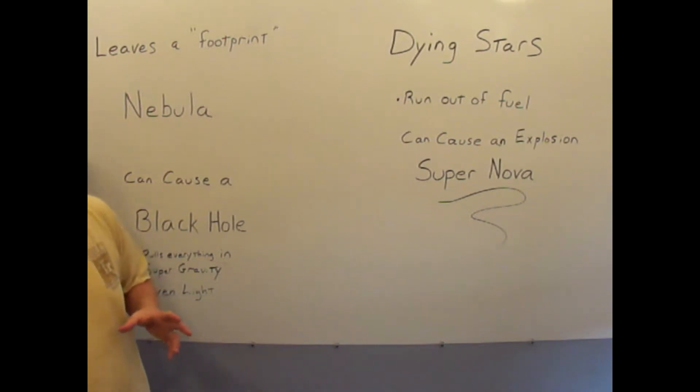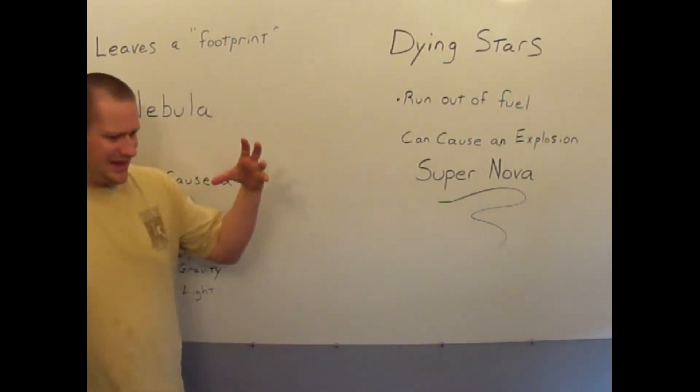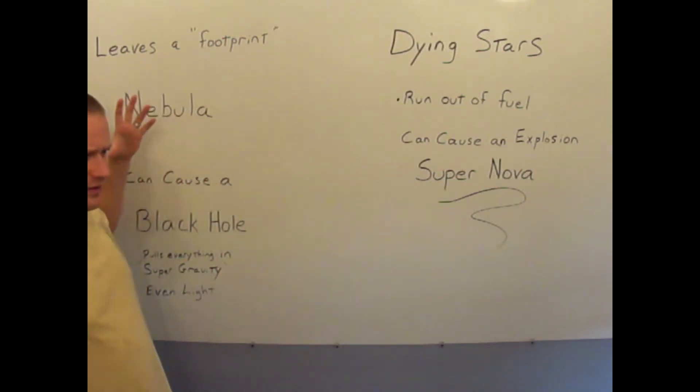Something that can happen when a star goes supernova and explodes is that all the gases and everything burn off and go all over the place. But matter can be pulled into this gravity so tightly that all of the matter compacts and gets super dense. When something has more matter and it has more mass, it then has more gravity.